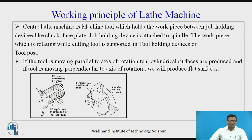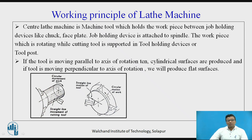It mainly consists of the workpiece, that is a cylindrical workpiece, which is supported in the job holding devices. The job holding devices is in the rotating position and the tool is moving along the axis of the rotation — parallel to the axis of rotation. In this case, you will find cylindrical surfaces. But if the tool is moving in the perpendicular direction to the axis of rotation, then you will find flat surfaces.